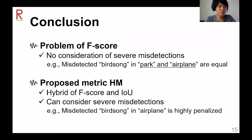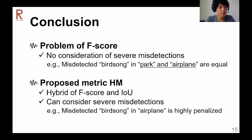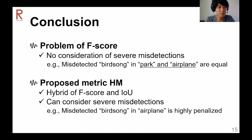Now, just to summarize: conventional evaluation metrics cannot consider the severeness of misdetections — for example, misdetected birdsong in a park and in an airplane are treated equally. Our proposed metric can consider severe misdetections. The proposed metric combines F-score and IOU. In the proposed metric, severe misdetections are highly penalized. That's it. Thank you for your attendance.